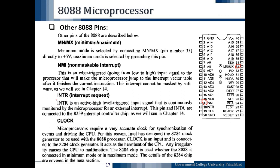The next pin is the Interrupt Request pin INTR, pin number 18. It is an active high, level-triggered input pin that is continuously monitored by the microprocessor for an external interrupt. This pin and the interrupt acknowledgement pin are connected to the 8259 interrupt controller chip, as we will see in Chapter 14, which covers interrupt handling of the microprocessor.